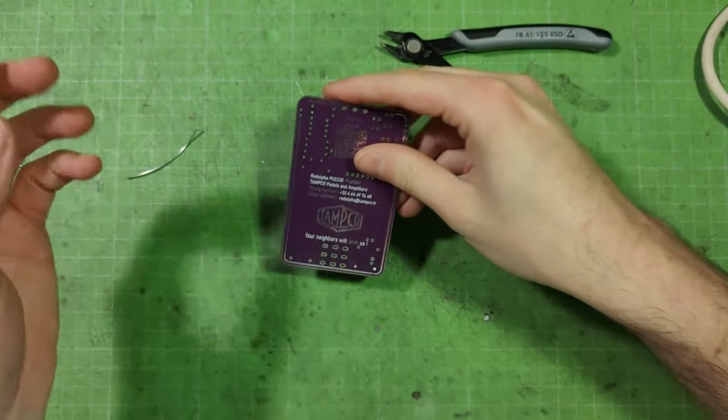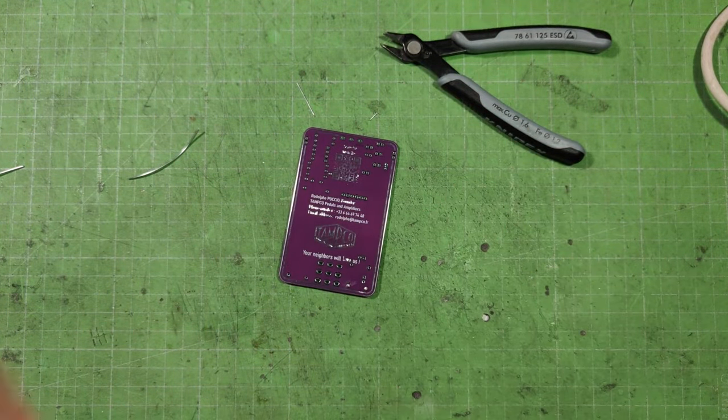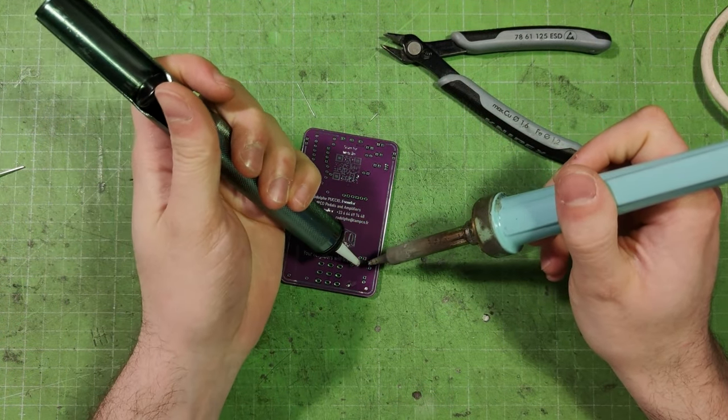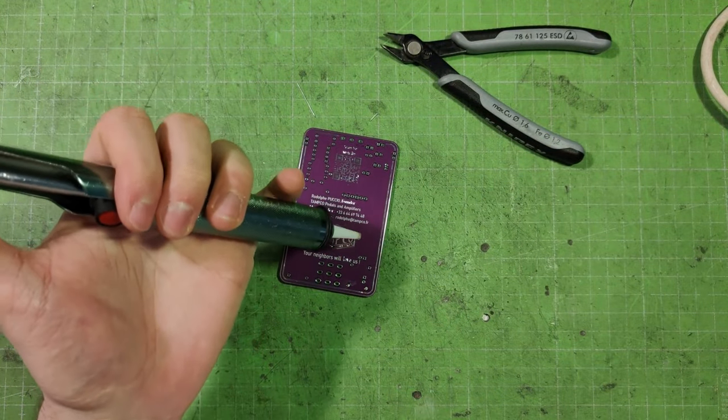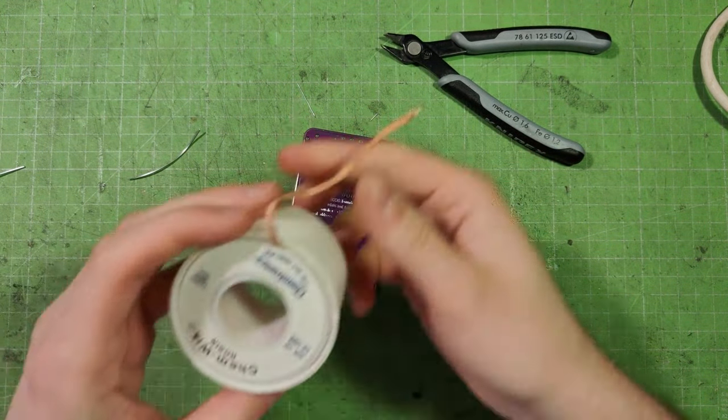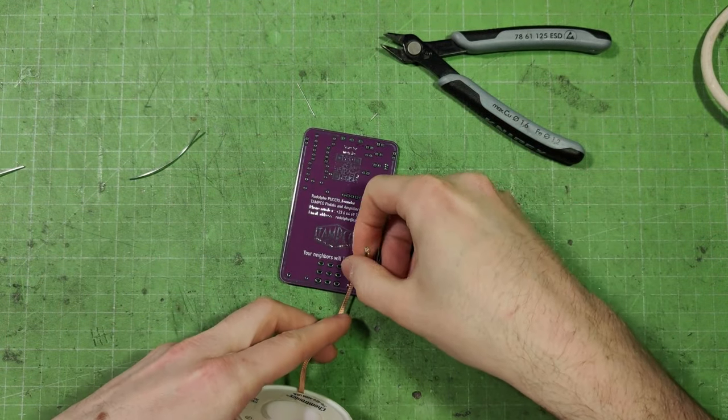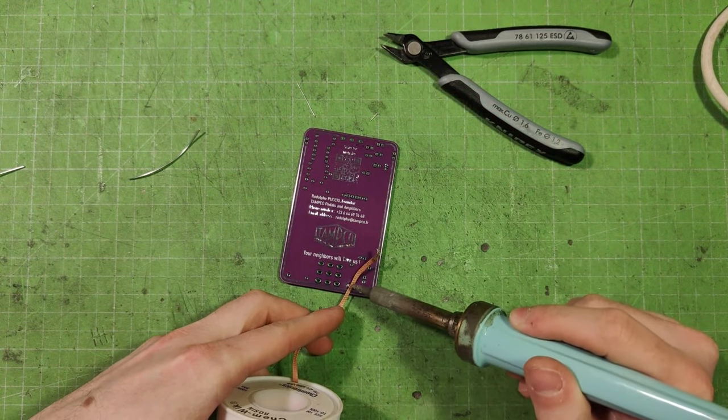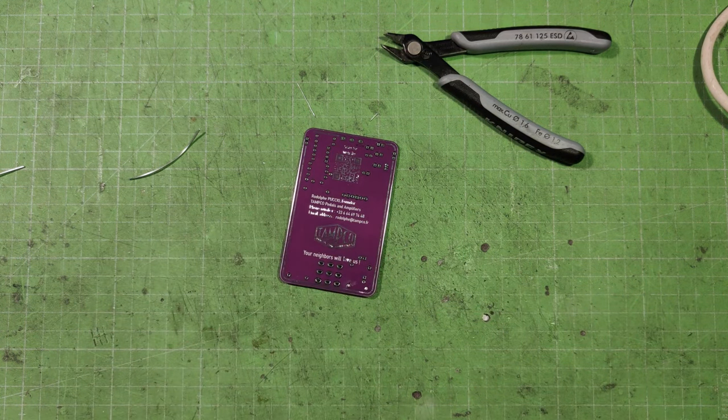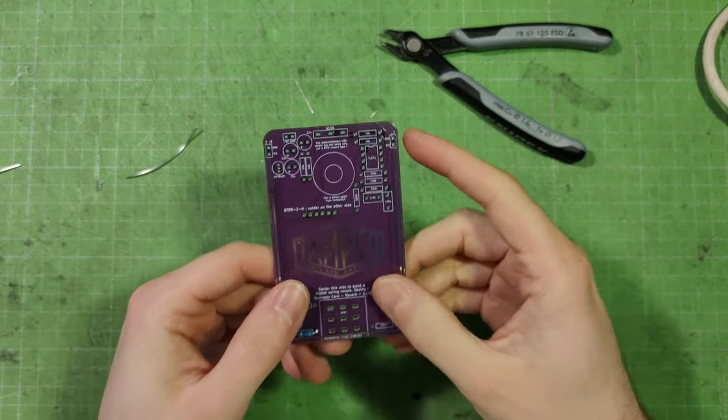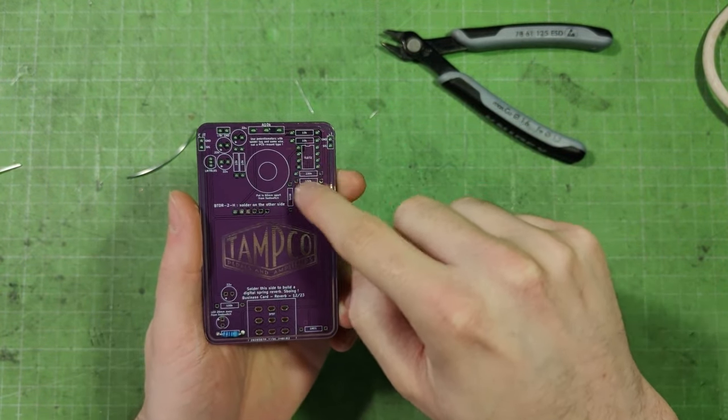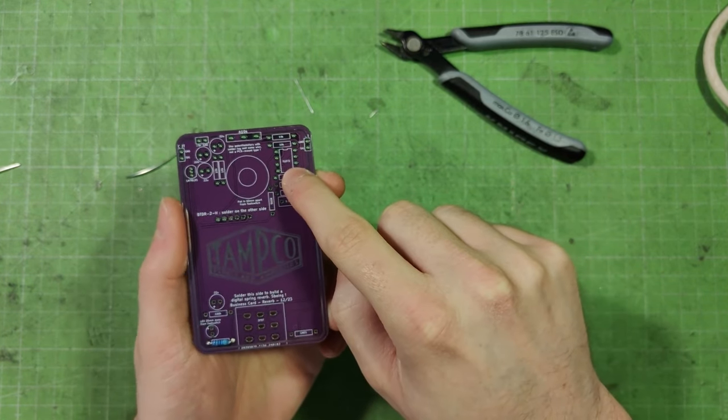If you made a mistake because the component value was not the right one, you can use a soldering pump. Just load it, melt, and press. And there you should desolder it. Try a few times because it's not easy on the first try. Or you can use a soldering braid like this, and just put it in contact and press with a soldering iron to heat it up.